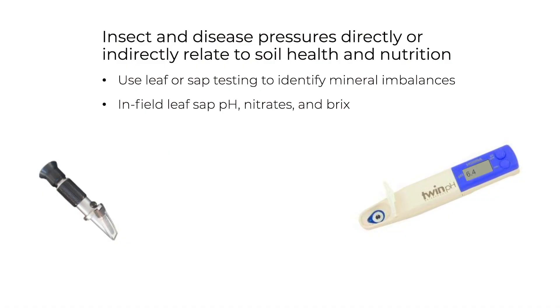Insect and disease pressure relate directly or indirectly to soil health and nutrition. As we improve soil health and nutrition, we see a reduction in these types of pressures. There are two meters you could look at using: your sap pH meter, a nitrate meter, and your refractometer or brix meter.